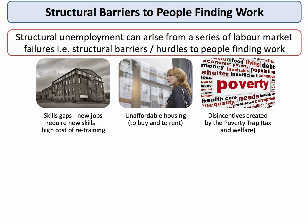Another factor causing structural unemployment is the very high price of housing, both to buy and to rent. It is widely agreed in the UK that unaffordable property is a major barrier to the geographical mobility of labour. If one adds to that unreliable and often expensive forms of commuting, this problem is made even worse. Many of the unemployed may remain out of work because of disincentive effects created by the tax and welfare system.